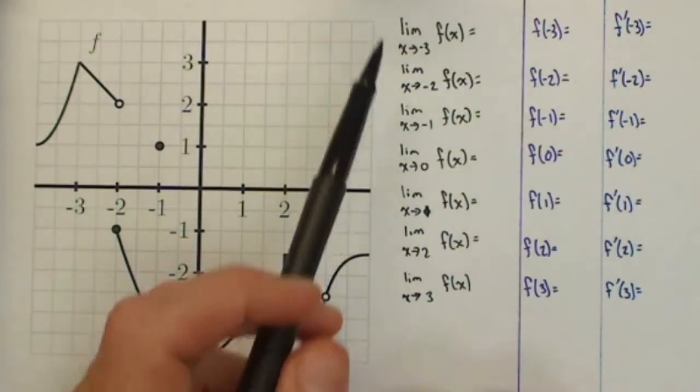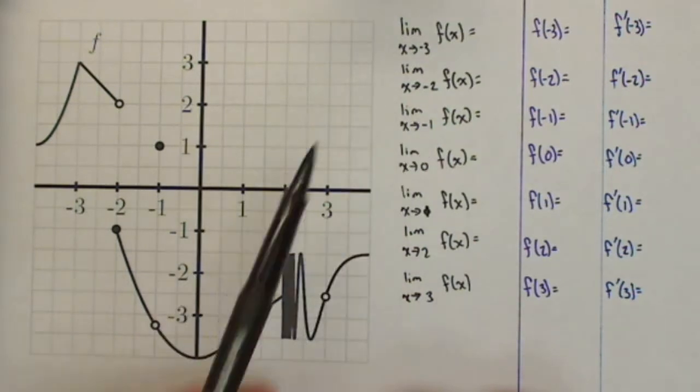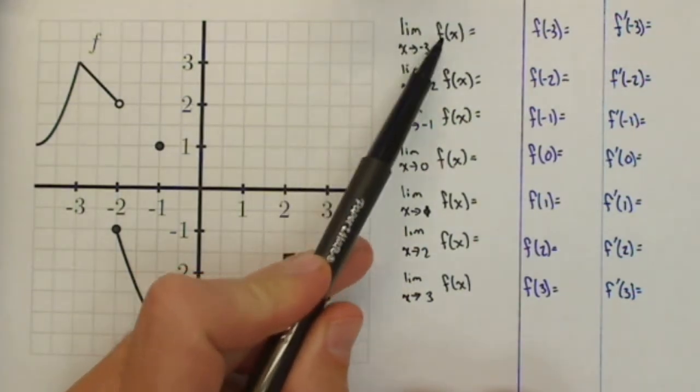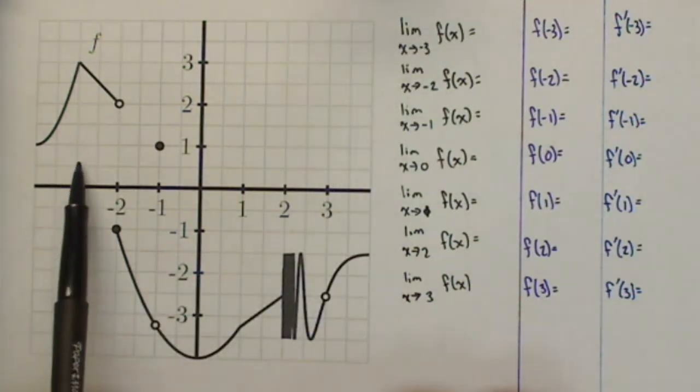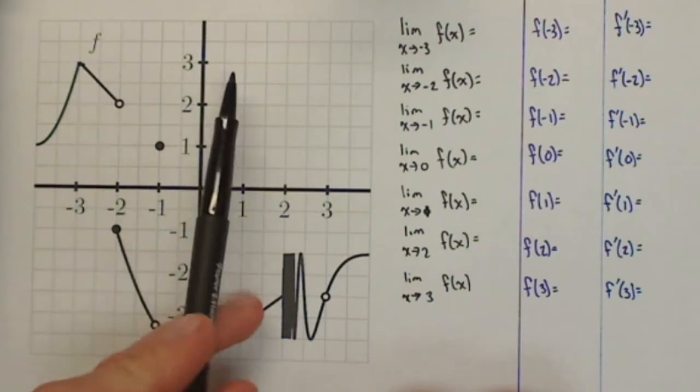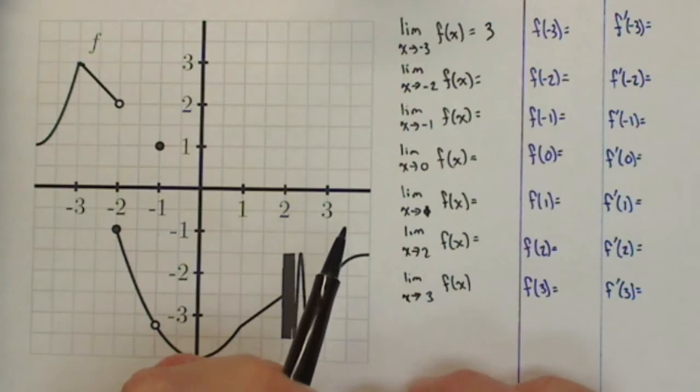So first off, let's talk about the limits and see if they exist or not, and if not, we'll say why. As x approaches negative 3, what is the limit of f of x? So negative 3, we're right here. We can clearly see the function behavior, it looks like it ends up at 3. So that would be our limit as x approaches negative 3.